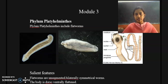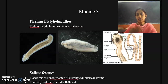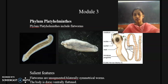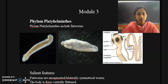Good morning students. In this session we will discuss a new module. In this module you have to study in detail about three phyla: phylum Platyhelminthes, phylum Nematoda, and phylum Annelida. Each phylum has certain classes. For phylum Platyhelminthes you have to study three main classes: class Turbellaria, class Trematoda, and class Cestoda.